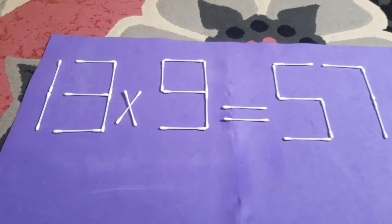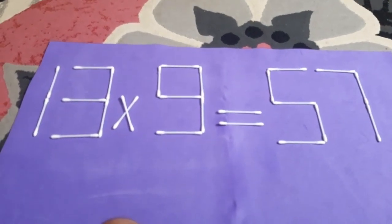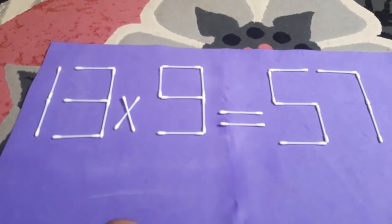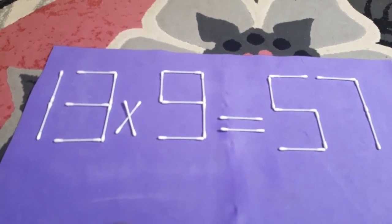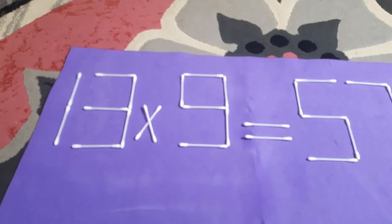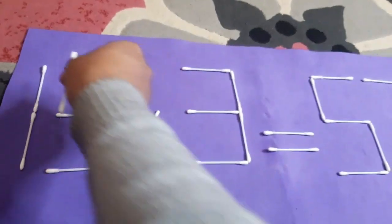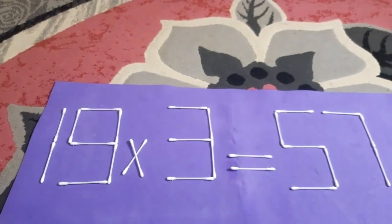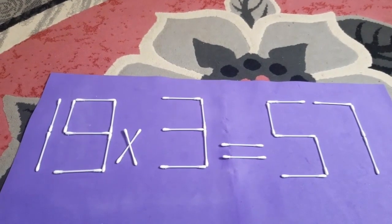Time is out. You can simply move only one stick in order to correct this puzzle. Which stick will you move in order to correct the multiplication problem you are watching? It's this stick. Move this stick and put it here. Now we have 19 times 3 equals 57. Now it's correct.